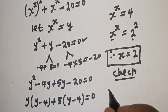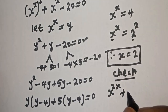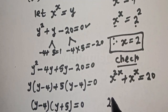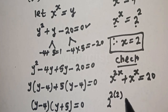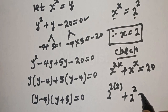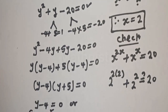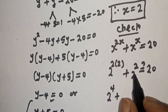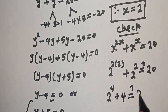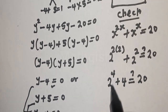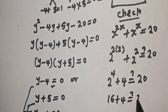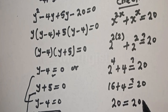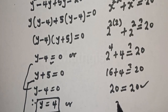We have the given equation: s raised to power 2s plus s raised to power s is equal to 20. When s equals 2: 2 raised to power 2 times 2 plus 2 raised to power 2 must equal 20. This gives 2 raised to power 4 plus 2 raised to power 2, which is 16 plus 4 equals 20. This satisfies the given equation at s equals 2.